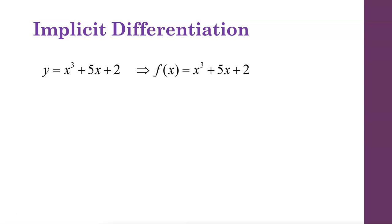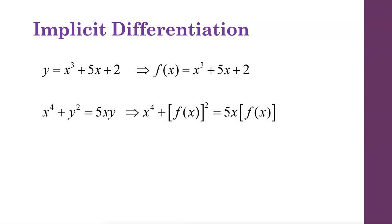What we are going to look at next are equations where our variables are not separated. Here's an example: x to the fourth plus y squared equals 5xy. These equations may be inconvenient to solve for our dependent variable, in this case y, or sometimes not even possible. So the way we're going to think about them is think about y as a function of x, and as we take the derivative we're going to make sure we apply the appropriate rules: chain rule, product rule, and the quotient rule.